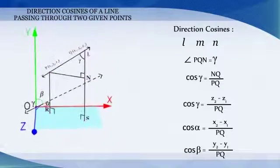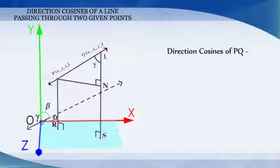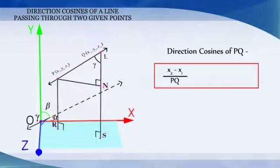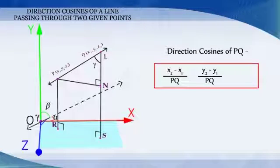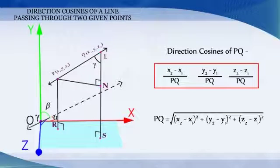Hence, the direction cosines of the line segment joining the points P(x₁, y₁, z₁) and Q(x₂, y₂, z₂) are (x₂ - x₁)/PQ, (y₂ - y₁)/PQ and (z₂ - z₁)/PQ where PQ is equal to √[(x₂ - x₁)² + (y₂ - y₁)² + (z₂ - z₁)²].